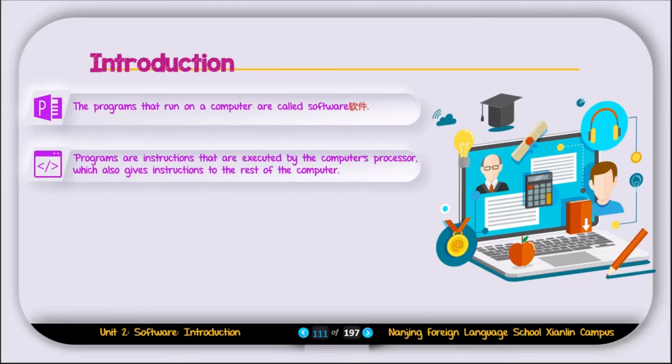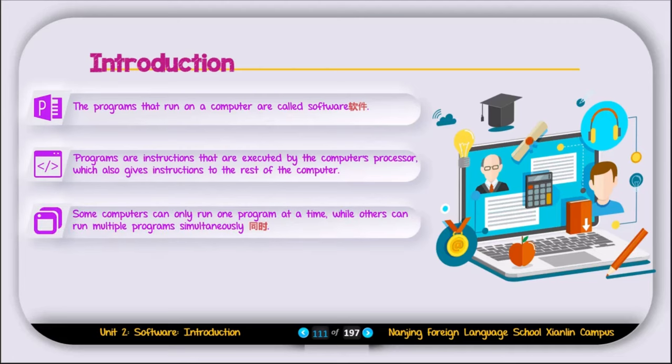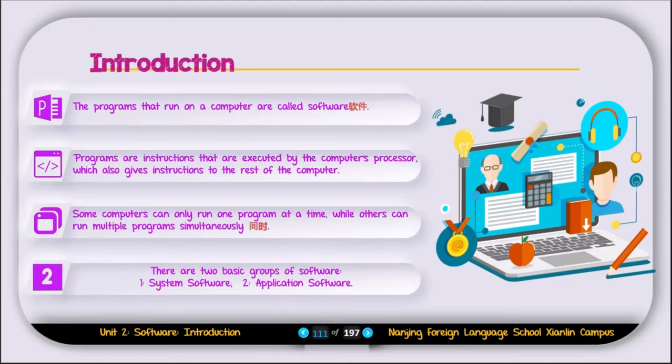Programs are instructions that are executed by the computer processor, which also gives instructions to the rest of the computer. Some computers can only run one program at a time while others can run multiple programs simultaneously. There are two types of software: number one is called system software and number two is called application software. In this chapter we are going to discuss both system software and application software.